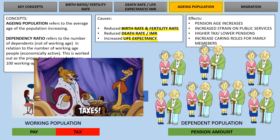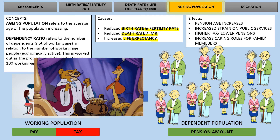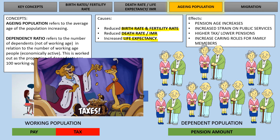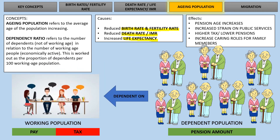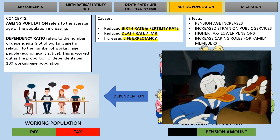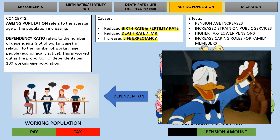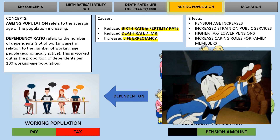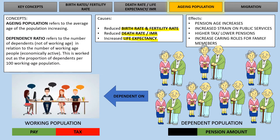However, the issue with having an increased number of older people is that the amount of pension per person goes down because there isn't as much money in the pot to share among members of society. The effects of this include pension ages going up, increased strain on public services, higher taxes, lower pension contributions, and an increase in caring roles for the family.